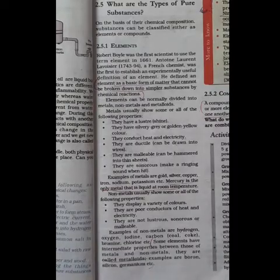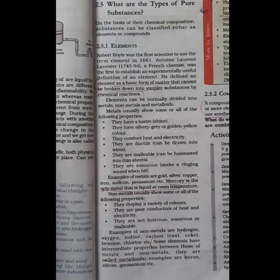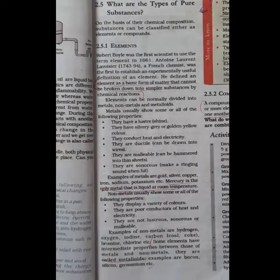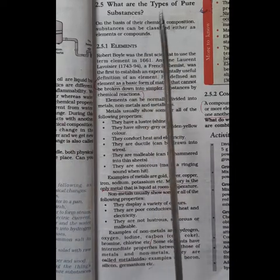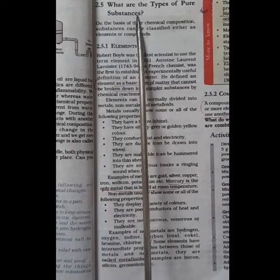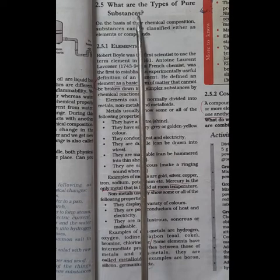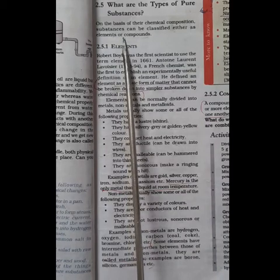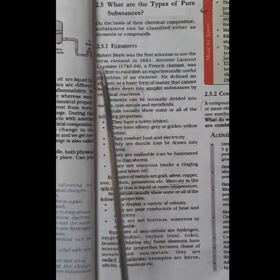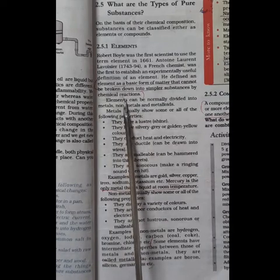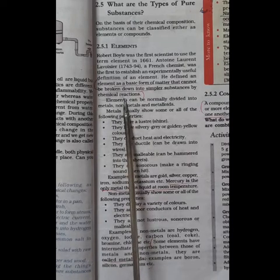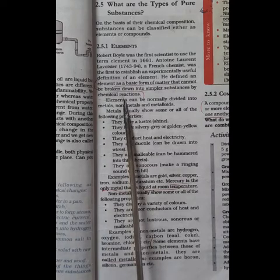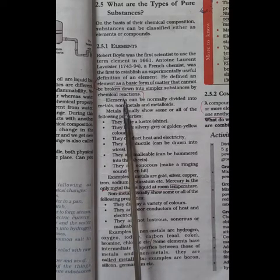What is a pure substance? A pure substance consists of a single type of particle. According to the chemical composition, substances are classified either as elements or compounds. What is an element? It is the basic form of matter that cannot be broken down into simpler substances by chemical reaction.